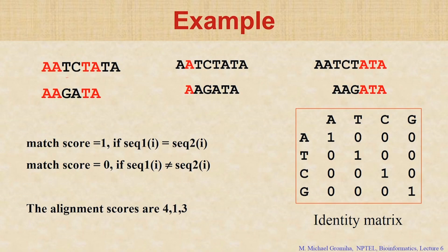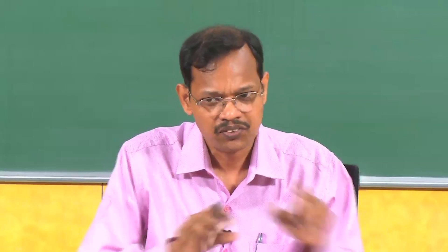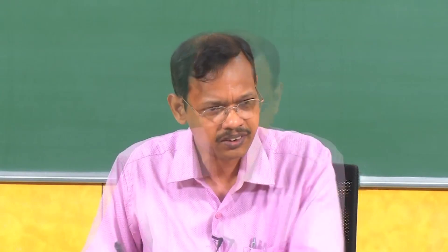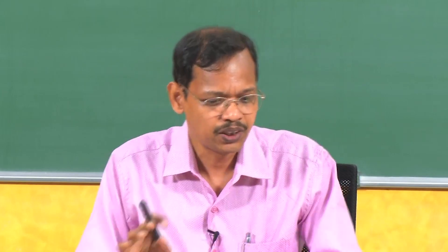Here I show the example. The same sequence I give: AAT, CTA, TA. The second one is AAGATA. If I want to align these two sequences without introducing any gaps, how many ways can we align? Three ways, because I do not want to introduce any gaps.